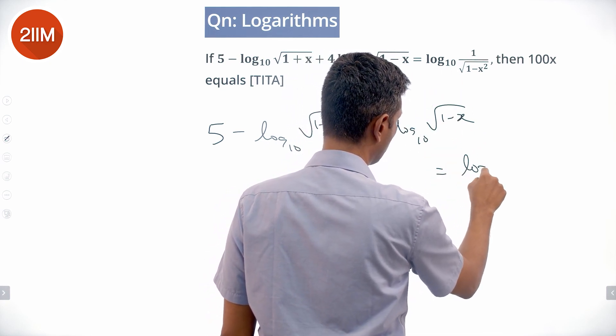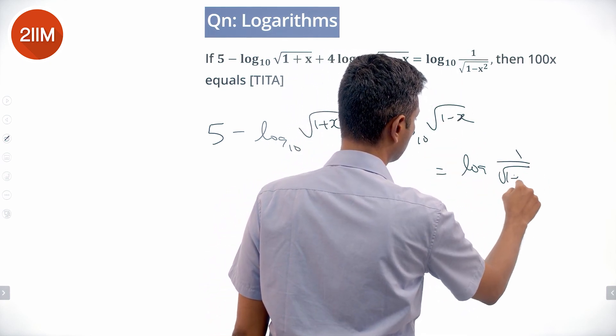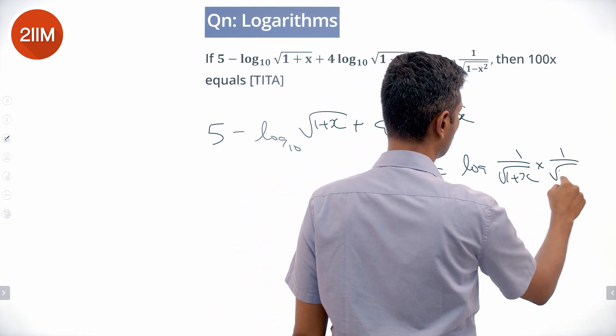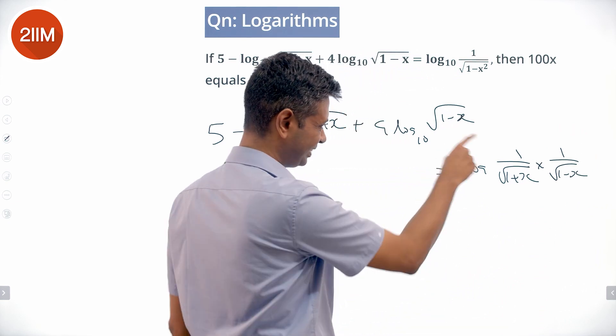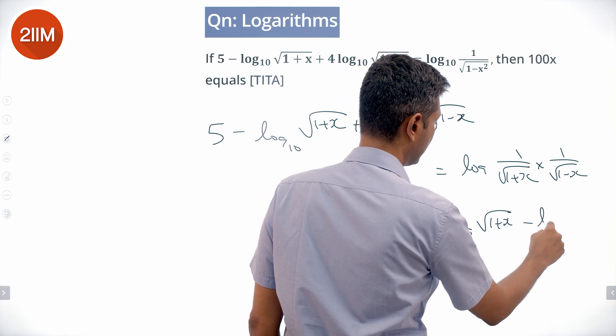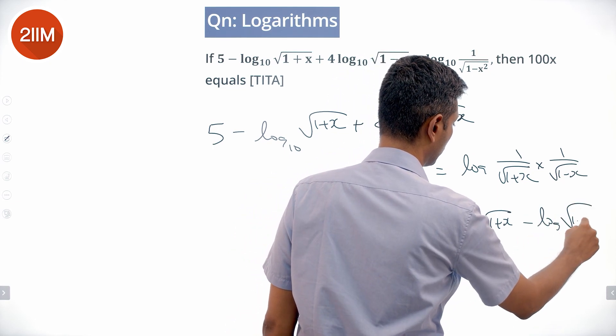This can be broken as log of 1 by square root of 1 plus x into 1 by square root of 1 minus x, or this side is minus log of square root of 1 plus x minus log of square root of 1 minus x.